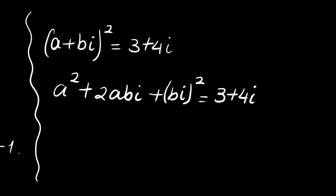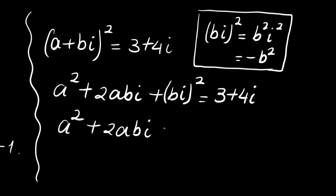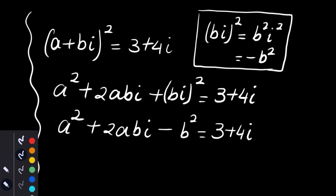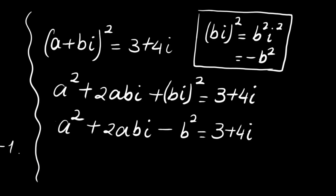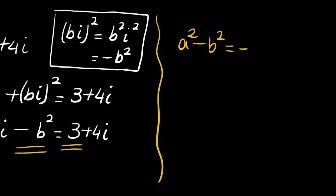This expands to a squared plus 2abi, and for the bi squared term: bi squared equals b squared times i squared, and i squared is negative 1 by definition, giving us negative b squared. So we have a squared minus b squared plus 2abi equal to 3 plus 4i. Equating real parts: a squared minus b squared is equal to 3.